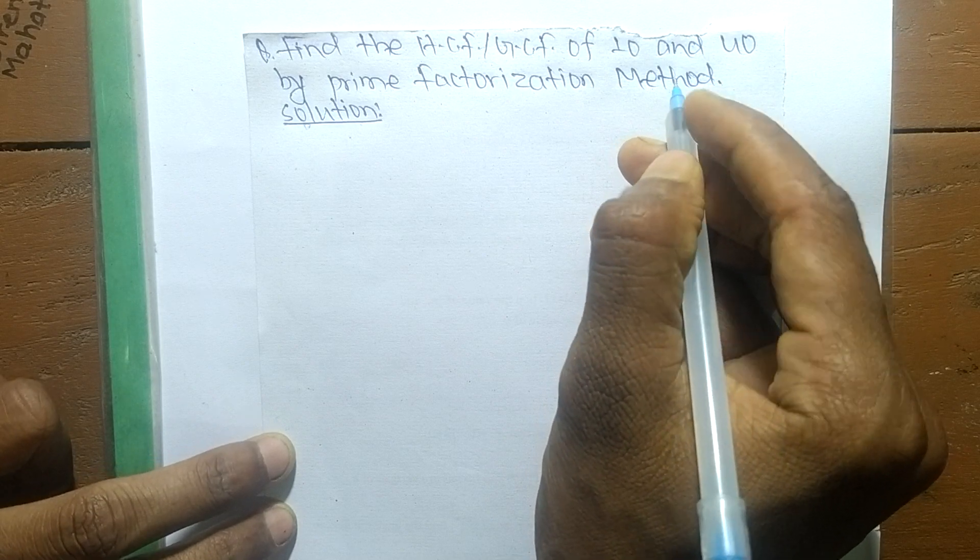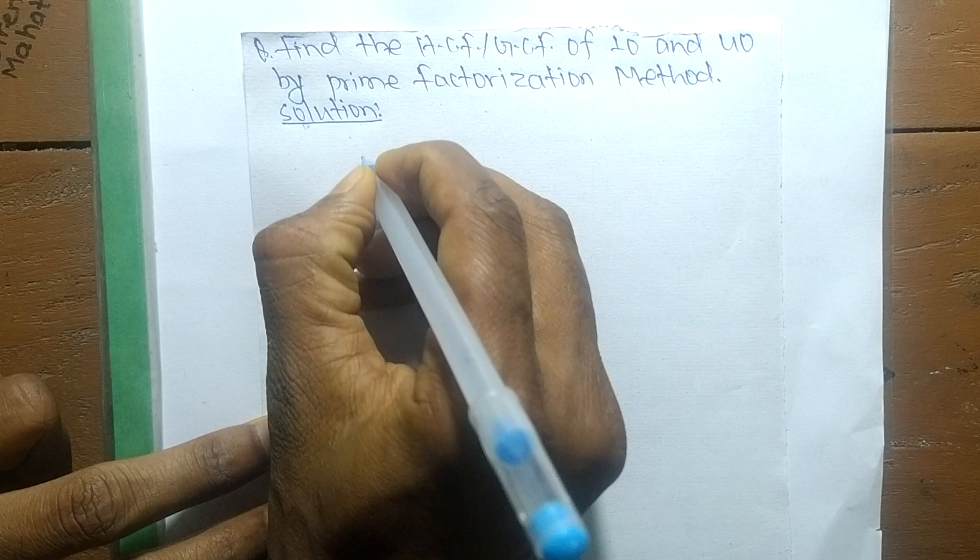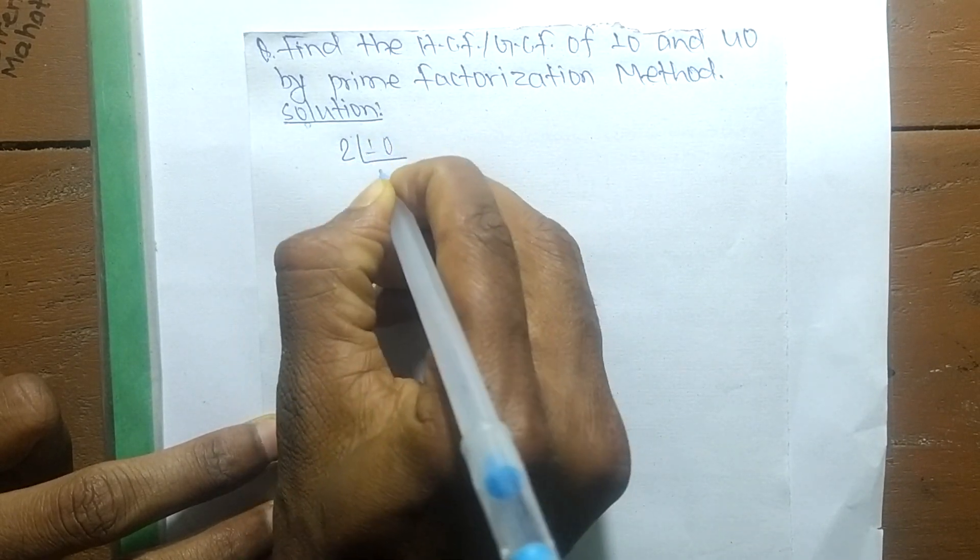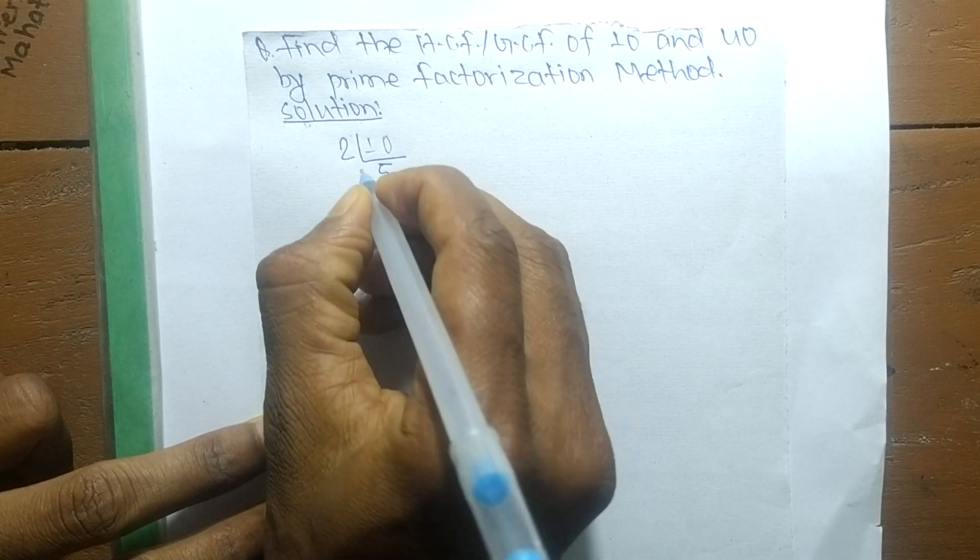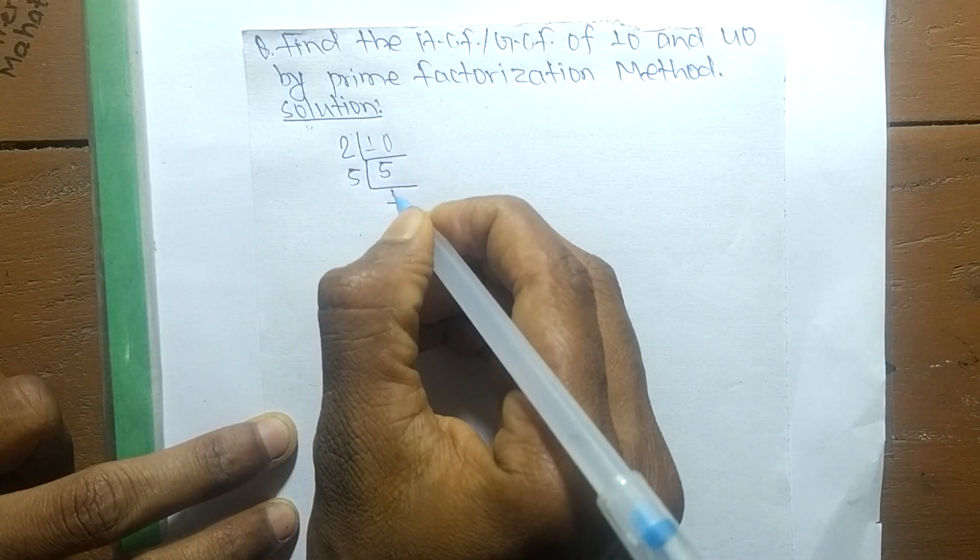First of all, we find out the prime factors of 10 and 40. So the prime factors of 10 is 2 times 5, which equals 10, and 5 times 1 equals 5.